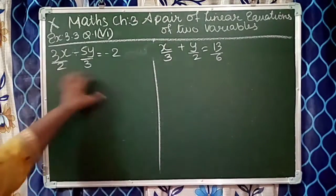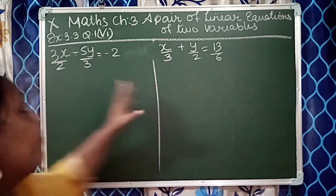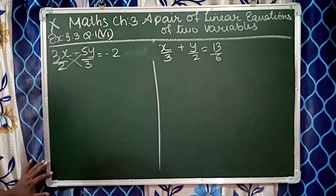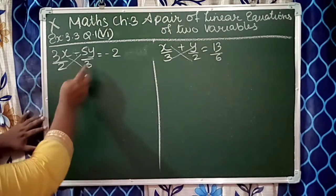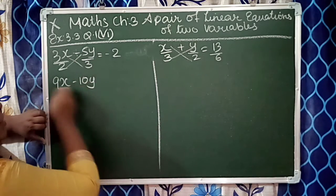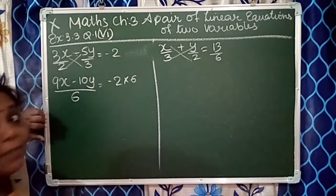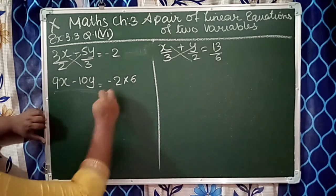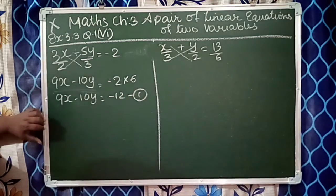First we will take LCM and remove the fractions from equations 1 and 2. For 3 and 2, LCM is 6. Multiply by 3 here and 2 here. So 3 into 3x is 9x, minus 2 into 5 is 10y, upon 6. Here also we'll make it 6, is equal to 2 into 6. We can move the 2 here and 6 there. So 9x minus 10y is equal to minus 12. We got the first equation, see how easy it was.